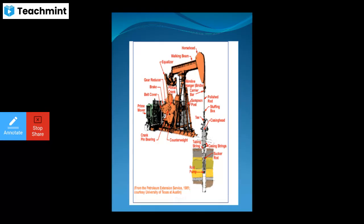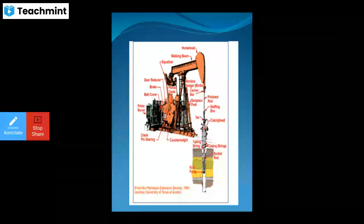You can see here all the parts of the sucker rod pumping unit: the working beam, equalizer, offset, gear reducer, brake, build cover, prime mover, crank pin bearing, counterweight, Samson post, carrier bar, wire line hanger, polish rods, sucker rods, etc. The rod pump goes inside the oil well and takes the crude oil from your oil well.